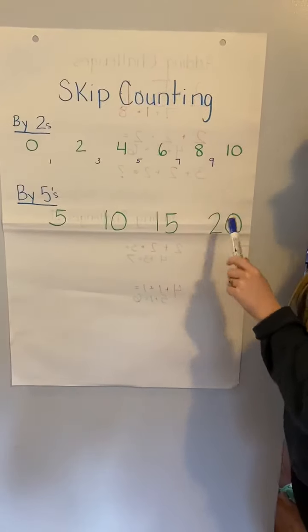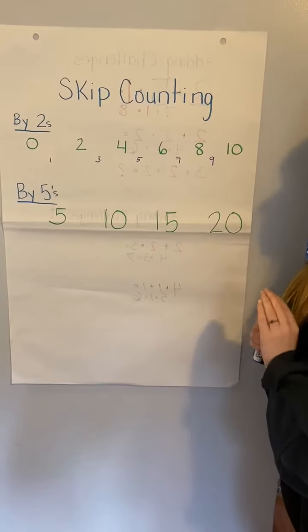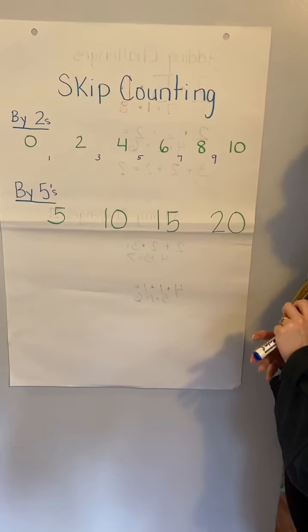And if you keep going, all of the numbers in forever and for all of infinity when you're counting by fives will end in zero or five. Always and forever.